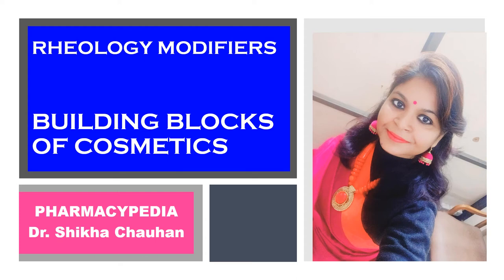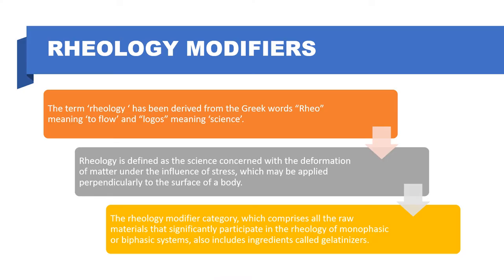Hello viewers, welcome to my channel Pharmacypedia. In this video, we are going to discuss about rheology modifiers, which are one of the building blocks of cosmetics. The term rheology has been derived from the Greek word 'rheo' which means to flow, and 'logos' means science. So it is the science of flow, defined as the science concerned with the deformation of matter under the influence of stress which may be applied perpendicular to the surface of the body.